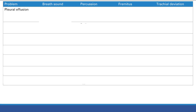Percussion: what changes it? You get more hyper-resonant percussion if there's more air in the lungs — more air means it sounds more like a drum. What makes percussion more dull is if you get more fluid, or if the tissue becomes more dense, such as a consolidation. That causes a dull percussion.